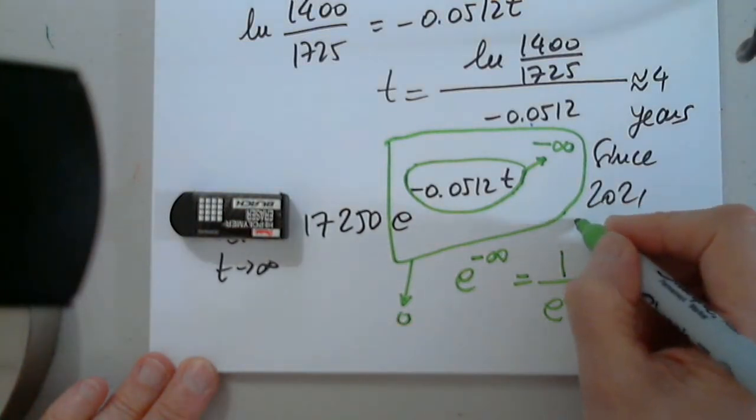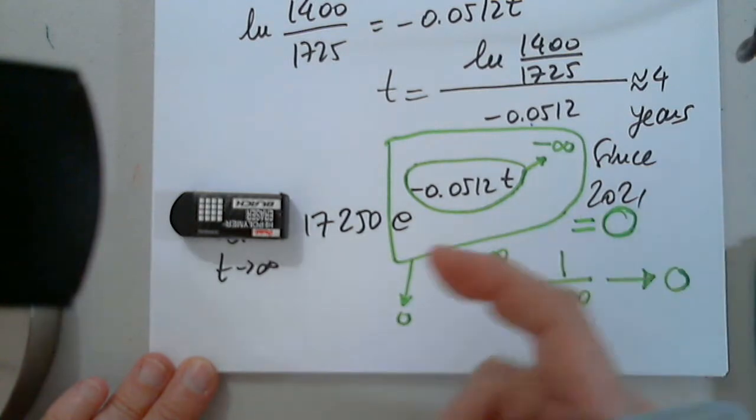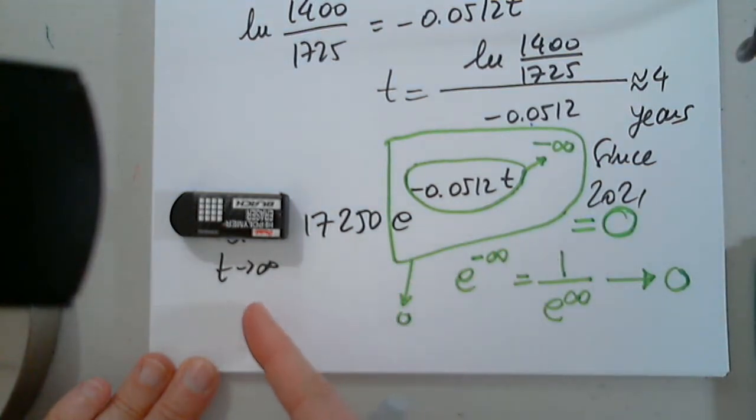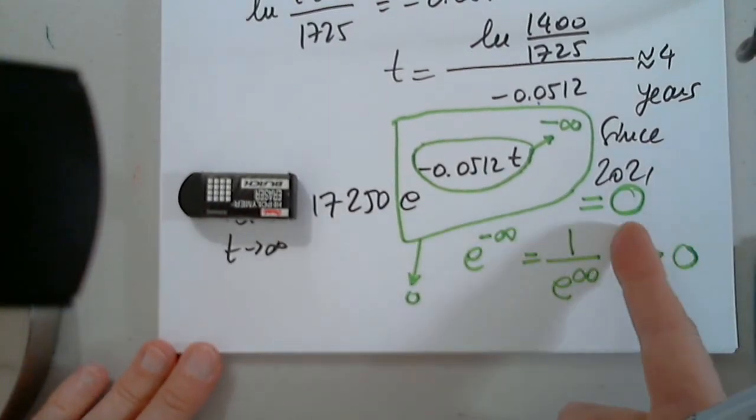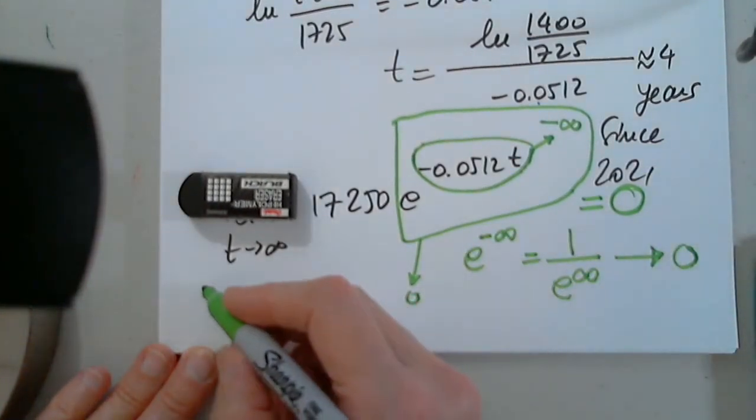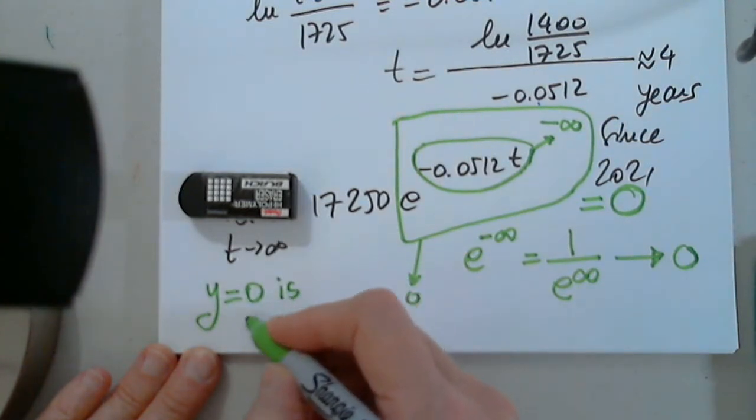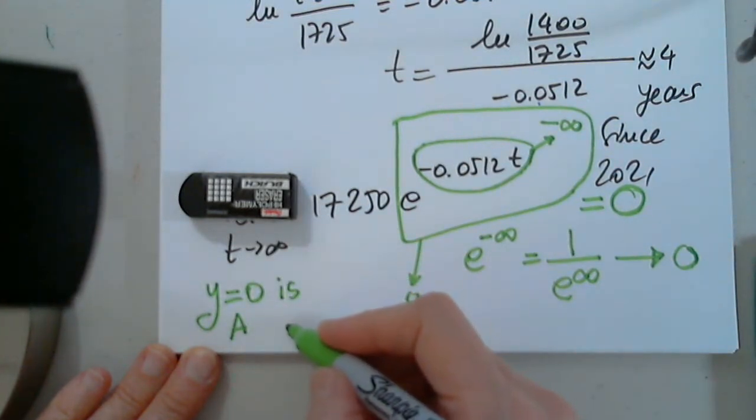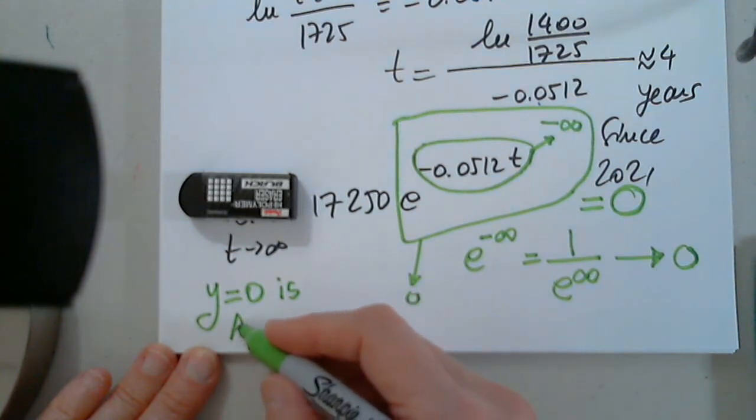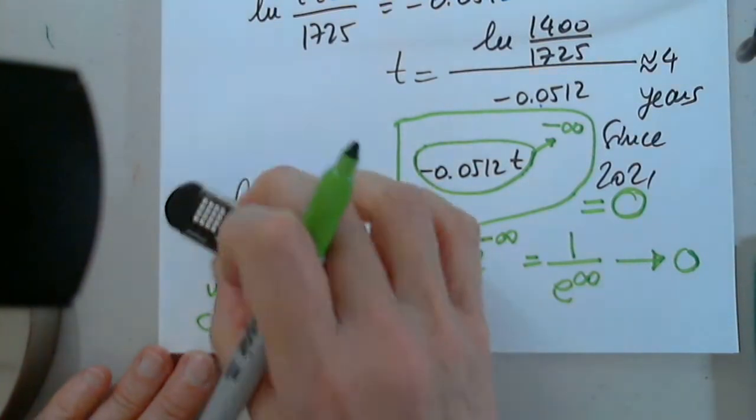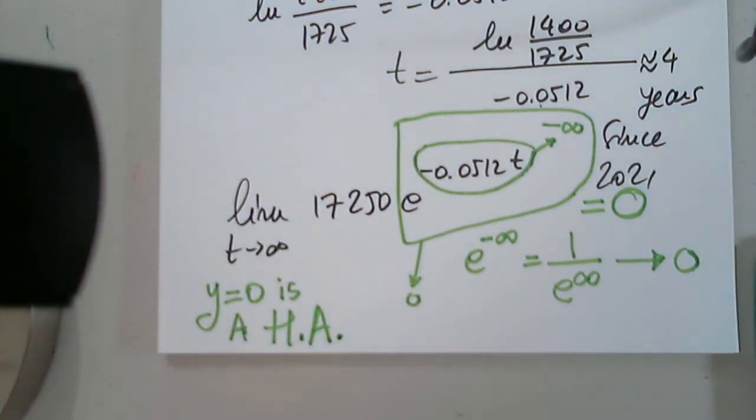So if this whole thing approaches 0, how much is 0 times this? Zero. When T approaches infinity, the function value gets closer and closer to 0. What does that mean? A horizontal asymptote.